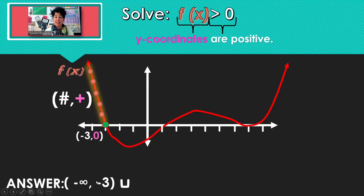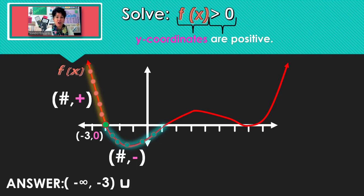Continuing along, looking for any solutions — all of the points in that section have negative y-coordinates. So that section is not part of our solution.